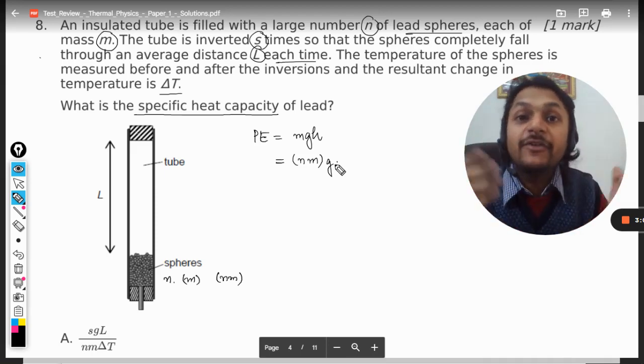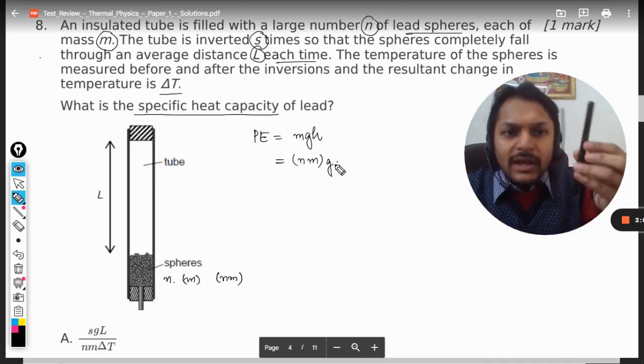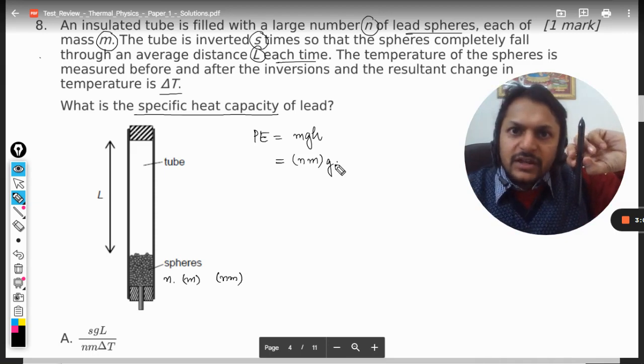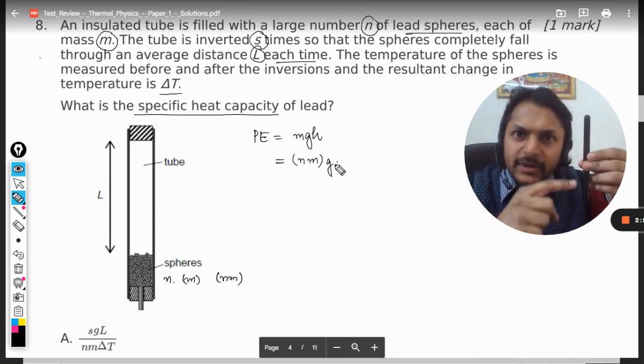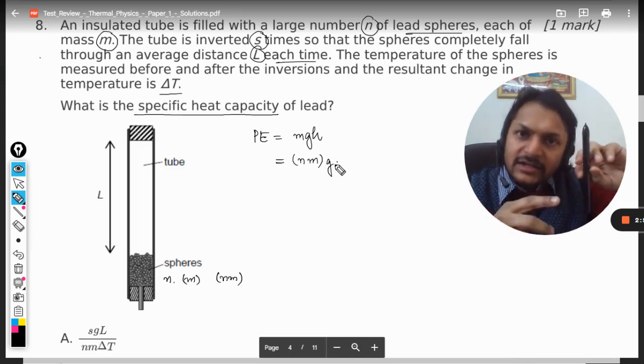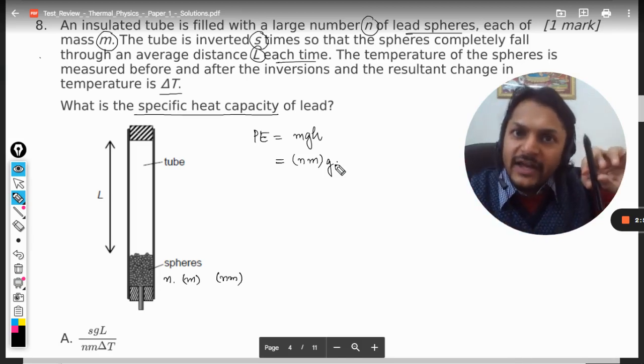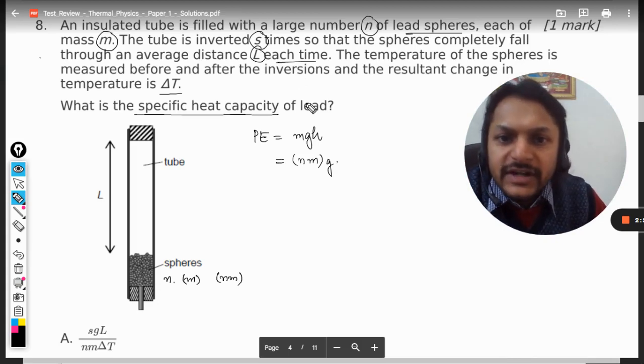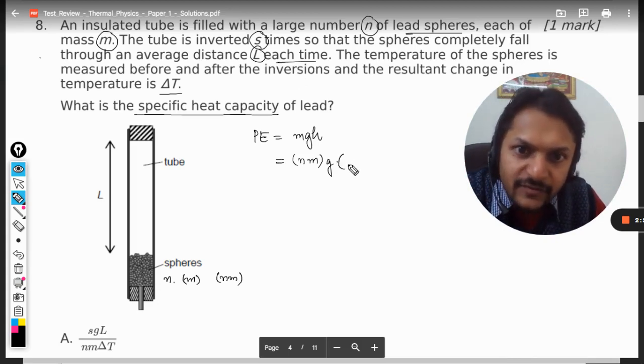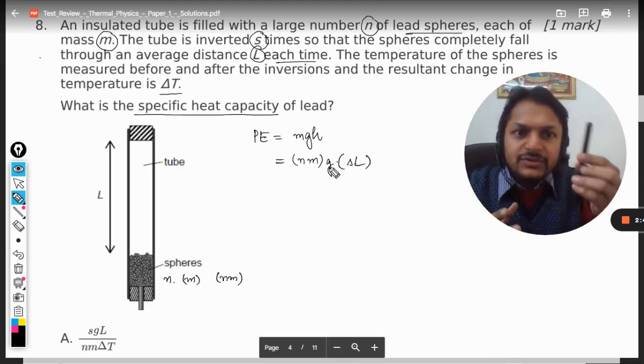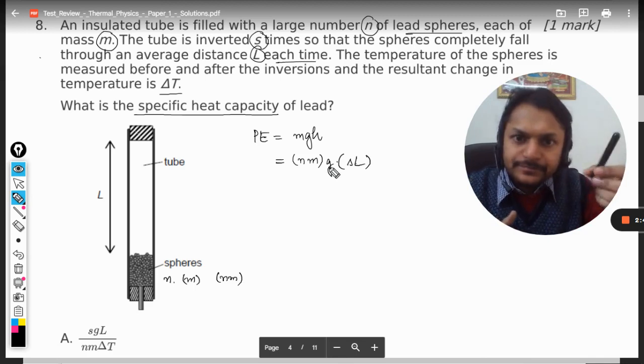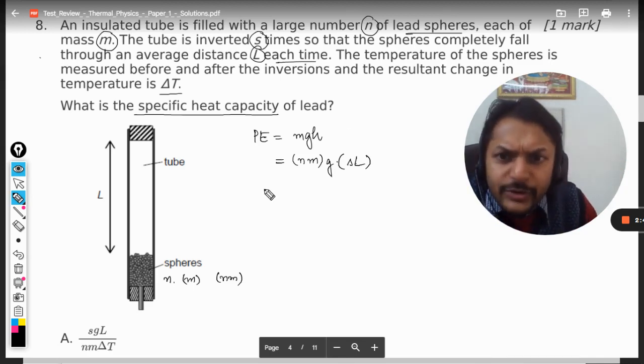What is the total height for which the masses have fallen? Now in one inversion the distance covered is l, in the second it becomes 2l, in the third it becomes 3l, 4l, 5l, 6l, and it was inverted s times. So what is the total height from which they have fallen? That can be taken as s into l, because s times it is traveling the distance l. This is the total potential energy.